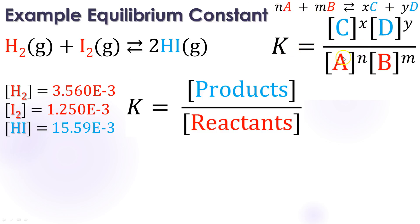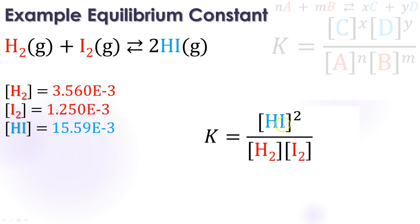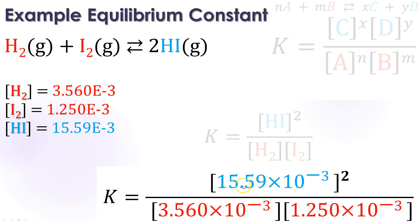So let's start plugging in some actual numbers here. I'm going to put HI to the second power, because if I look up here in my products, HI is going to be to the coefficient, which is 2, divided by H2. And I don't need an exponent here, because there is no coefficient in front of H2 other than 1. Same thing with I2. Remember, I'm not adding these. I'm multiplying them. So this is how I'm going to set it up with my products, each of them raised to their coefficient, divided by my reactants, each of those raised to their coefficients. Putting in the actual numbers, putting these in right here, is going to give me a K value of 3,503.4.